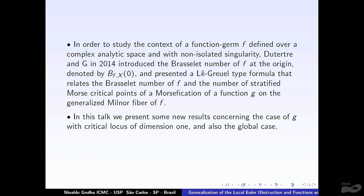This invariant, the Brasselet number, counts in some sense the number of Morse points of a Morseification of a function in the generalized Milner fiber of another function. In this talk, I will present some results about this situation. The first results are proved in a paper with Nicolas some years ago, and the new results were proved by Ellen Santana in her thesis. The second part will cover the global case — there is a notion of Euler obstruction in the global case, and we would like to understand what information we can get when we have a function defined on a global variety.